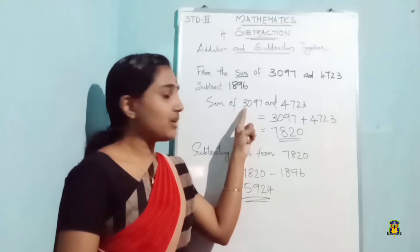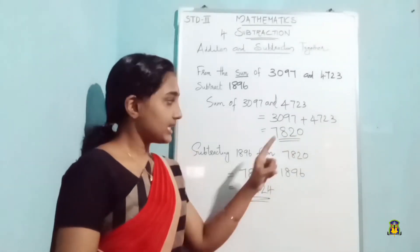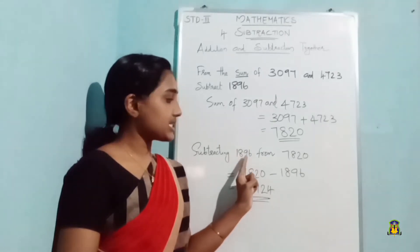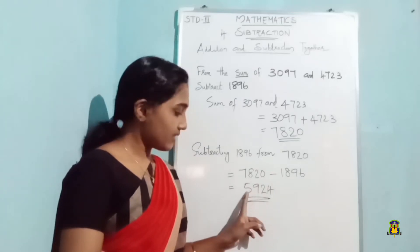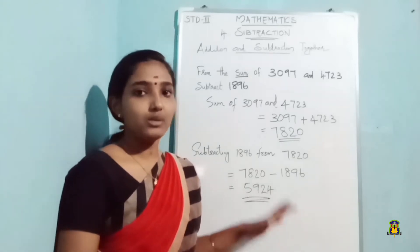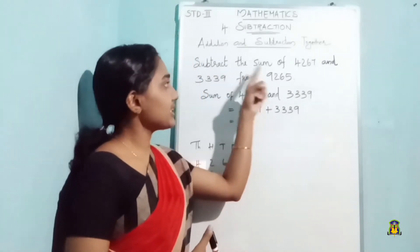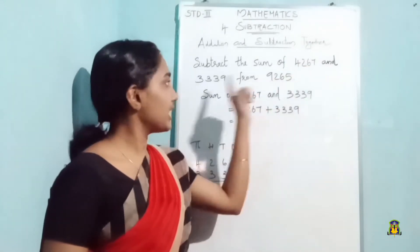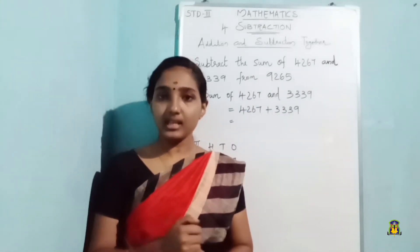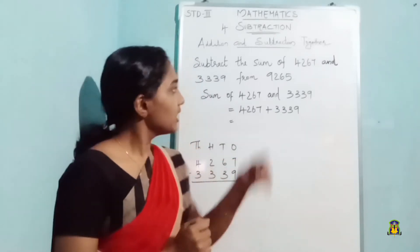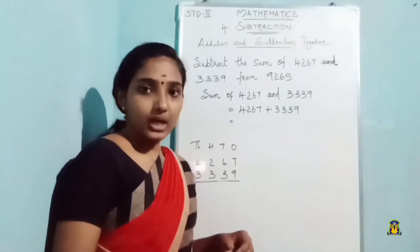As per the question, we added first and then subtracted. Moving on to the next question: subtract the sum of 4267 and 3339 from 9265. Here also we have to add and then subtract. So first let's find the sum of 4267 and 3339.